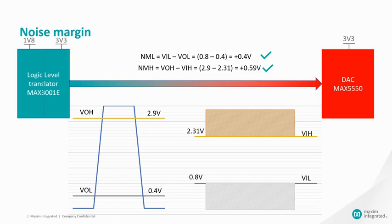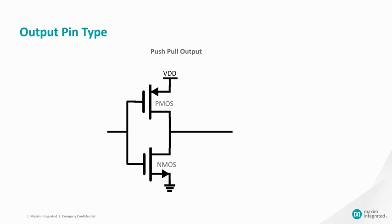Now we have seen how to check the noise margin of two different ICs. In the following slides, let us see what other parameters should be considered when selecting a level translator. The output pin type can be either push-pull or open drain. For a push-pull pin, when PMOS turns on and NMOS turns off, the output goes high — this is called the push phase.